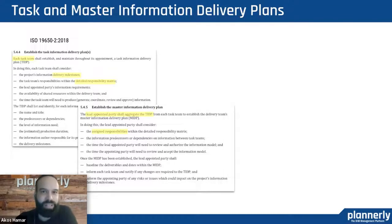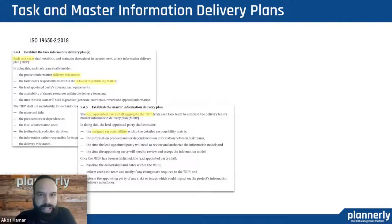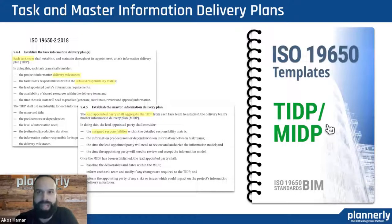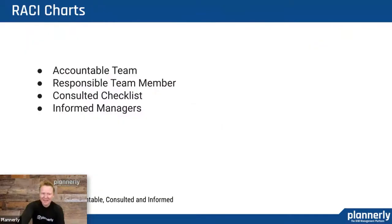TIDP, MIDP — the task and master information delivery plan. To put it in very simple terms, this is a task list. Each task team assigned a certain activity would put together their to-do list and how they are going to execute those tasks — that would be the task information delivery plan. The lead appointed parties — the ones in charge of bringing things together — can assemble what is called a master information delivery plan. That's a set of task information delivery plans combined, and that's going to be the way of carrying out the project. And yes, we happen to have a template for that.